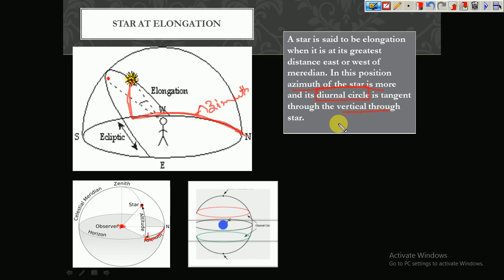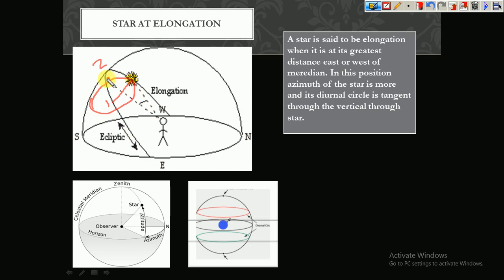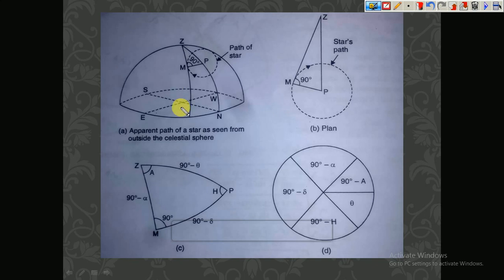The next important concept is the diurnal circle, which is tangent to the vertical through the star. The great circle we studied in Part 1 — the two small circles shown here are called diurnal circles. The diurnal circle is the path of the star. If this is the vertical, the diurnal circle is tangent to that vertical through the star. This is all about star at elongation.